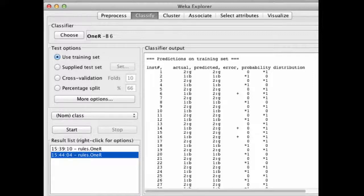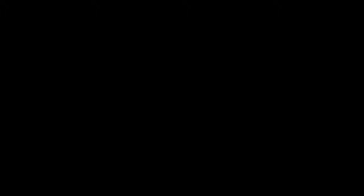Now, the question is, how does it get these predictions? This is the value of attribute 6 for instance 1. And what the 1R code does is it goes through each of these conditions and looks to see if it's satisfied. Is 0.02 less than minus 0.2? No, it's not. Is it less than minus 0.01? No, it's not. Is it less than 0.001? No, it's not. It's surprisingly hard to get these right, especially when you've got all the decimal places in your list here. Is it less than 0.1? Is 0.02 less than 0.1? Yes, it is. So, rule 4 fires. This is rule 4. And predicts a G.